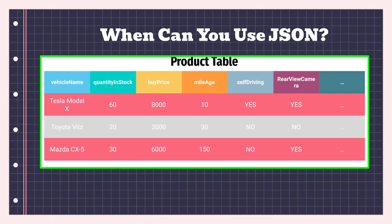Let me show you why you would want to use JSON. Looking at this vehicles table — our products table — we have vehicle name, quantity in stock, buy price, mileage, whether the car is self-driving, and a rear view camera column. I'm going to create this table and use it to teach about JSON and why it is beneficial.